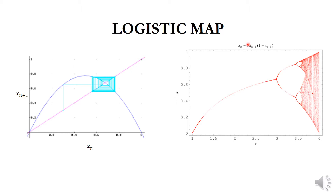In general, xn will be between 0 and 1, and r should be greater than 1. If r is less than 1, iterations drive the population to zero — the population goes extinct. For r less than 3, plotting xn versus the next iteration shows convergence.